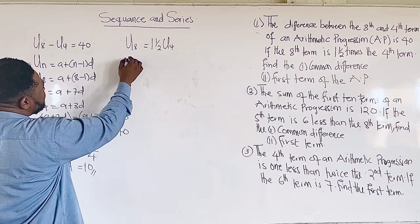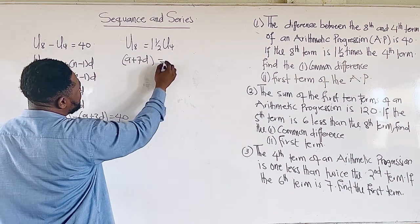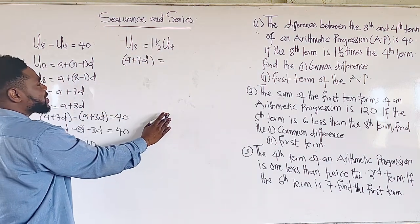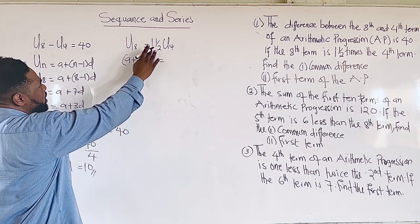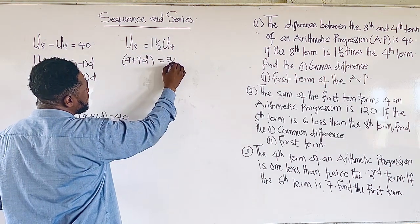Now our 8th term, we know that is going to be A + 7D, should equal... We change this mixed fraction to improper fraction. So 2 times 1 is 2, 2 plus 1 is 3. This will give us 3/2.